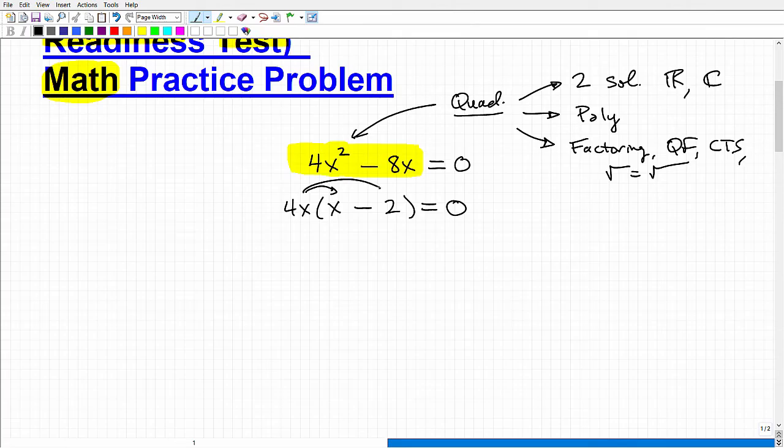Anytime you factor something, just ask yourself, if I was to multiply back in, would I get back to the original? So 4x times x is 4x². 4x times minus 2 is going to be minus 8x. Now the advantage of doing this or factoring is we can use something called the zero product property. So I have this expression, or this variable, times this expression right here. I have two things being multiplied by one another, and the answer is 0.